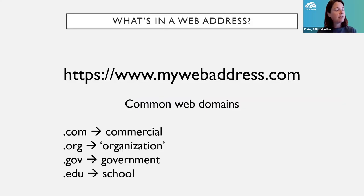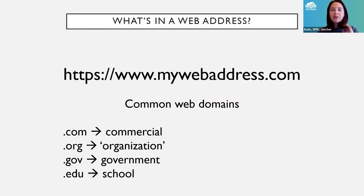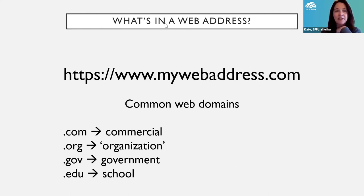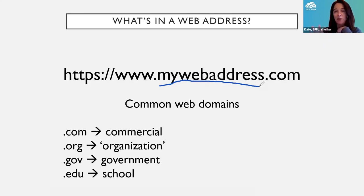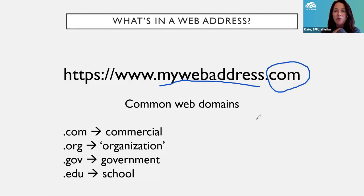Before we get going any further, a brief overview of what's in a website address — this is going to come up later when we're talking about search results. Every website has a unique address on the internet. Part of it tells you who they are, and then there's the top-level domain, which can tell you about what kind of website it is.